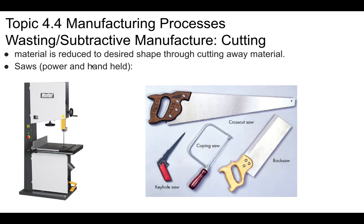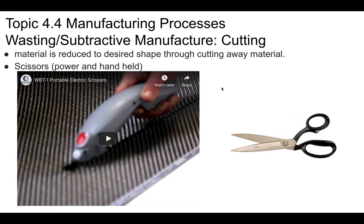The first type is cutting — material is reduced to the desired shape by cutting it away. This includes things like saws: you can have hand saws or a band saw, which people use to cut away material. You can also use scissors — hand scissors or power scissors used in cutting materials like carbon fiber or Kevlar.